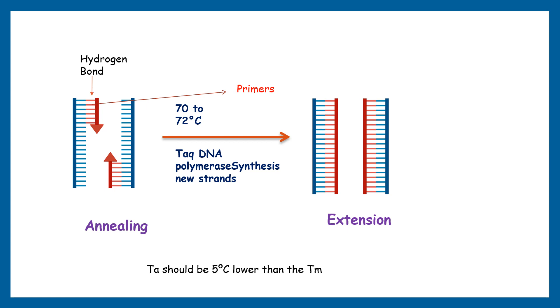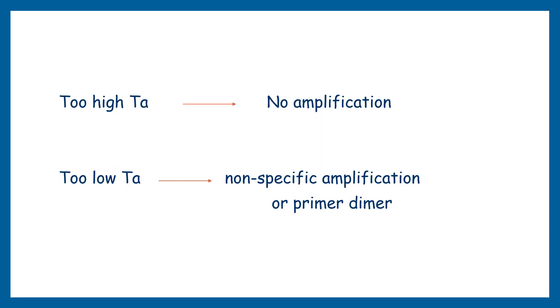Ideally, the annealing temperature should be five degrees Celsius lower than the melting temperature. Although you can check the annealing temperature using primer design software tools, it is very important to know that the GC content of the primer also influences the annealing temperature. Higher the GC content, the higher the annealing temperature.